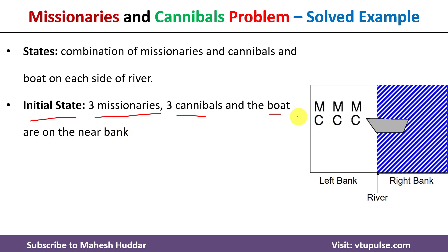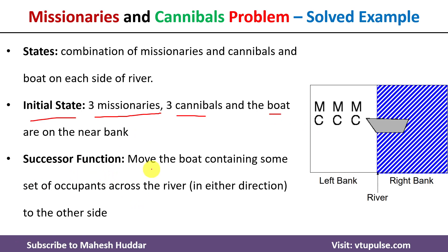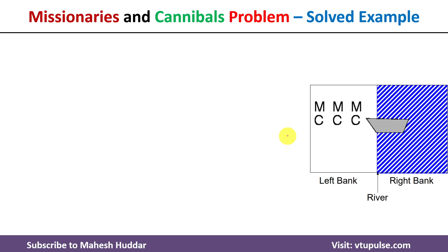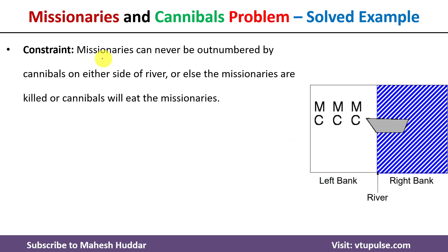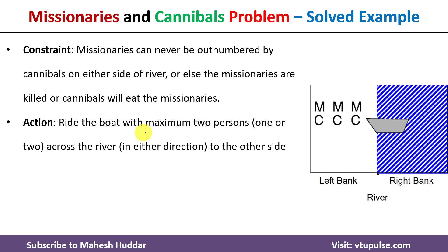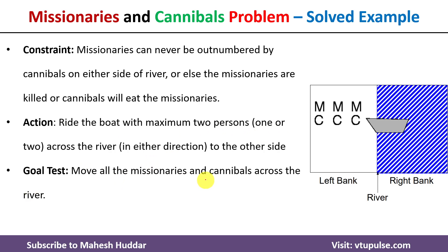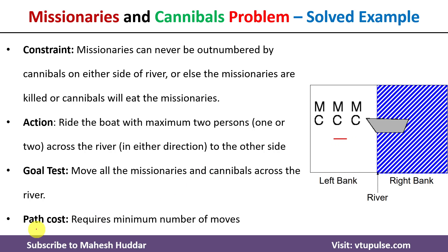The successor function is to move the boat containing some set of occupants across the river, either from left to right or right to left. The constraint is that at any point in time, if missionaries are fewer than cannibals, the cannibals will eat the missionaries. The action is to ride the boat with one or two persons across the river. The goal is to move all missionaries and cannibals from the left side to the right side of the river, with minimum path cost or number of moves.